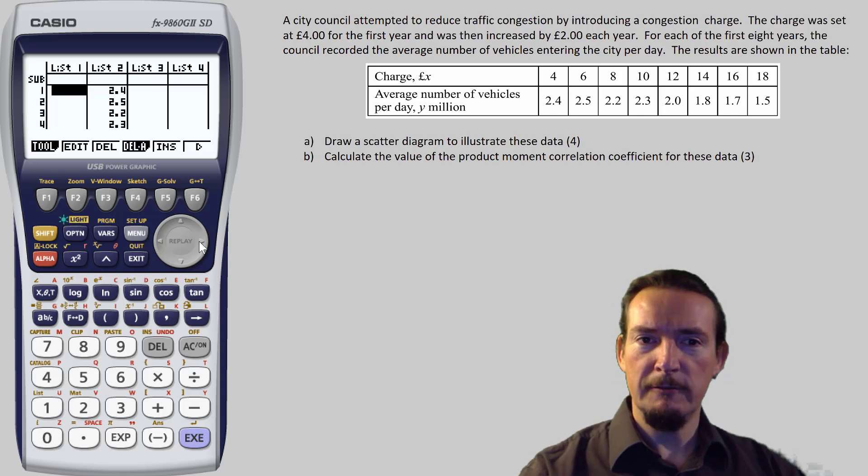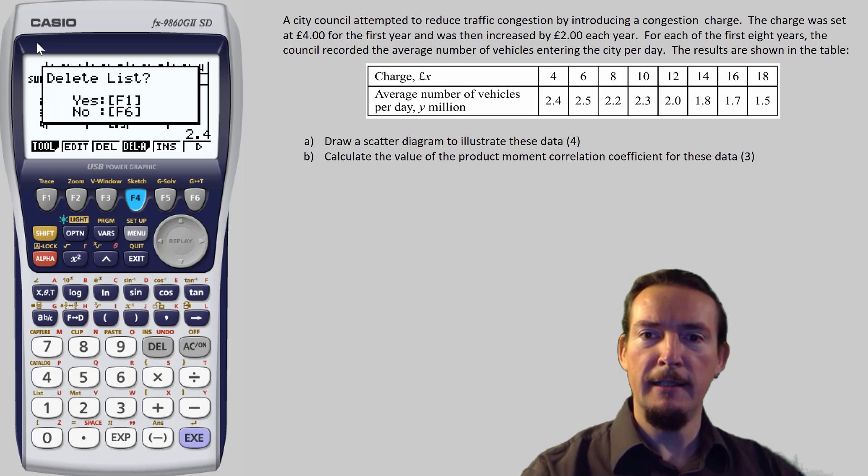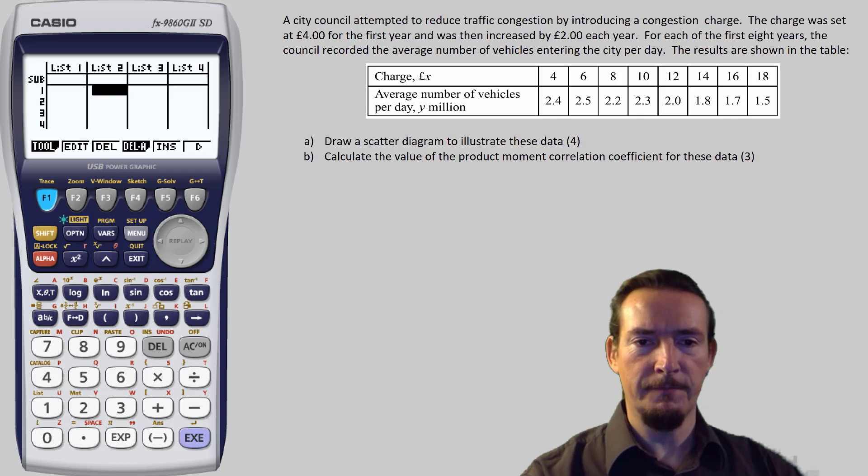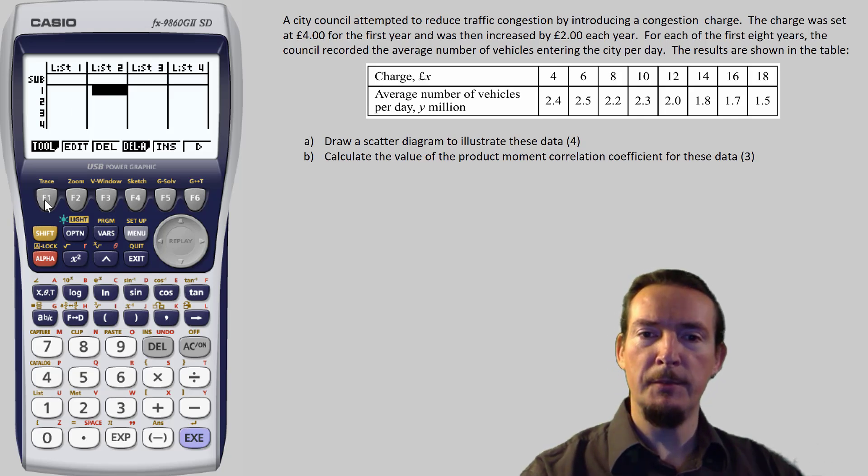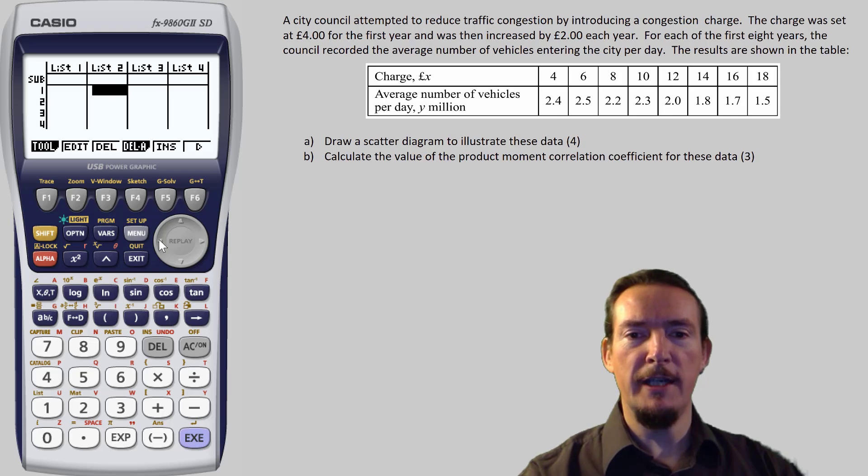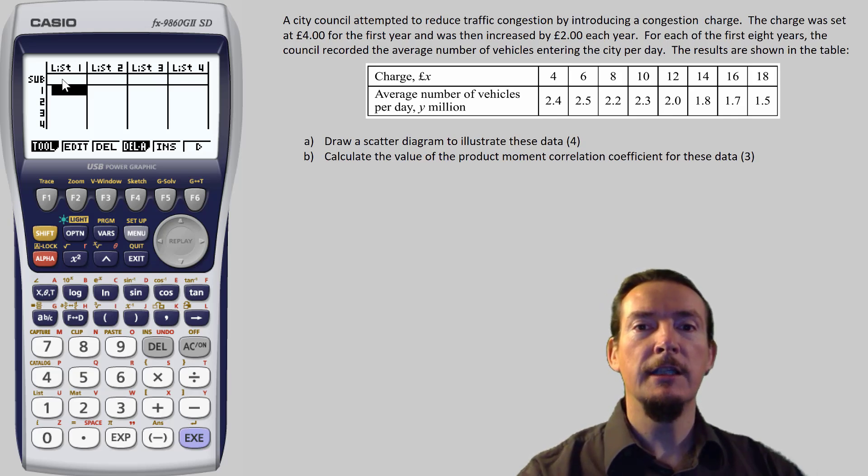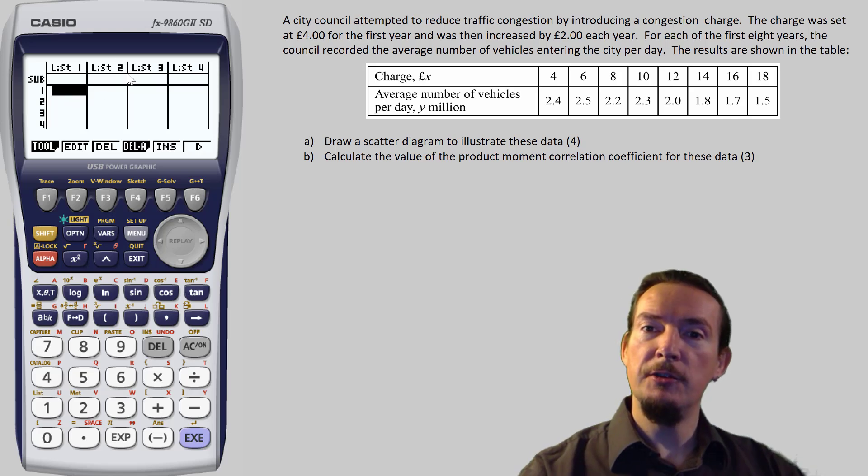Now, move the cursor into the second column, and then press F4 followed by F1 again to get rid of list 2. Right, so having now tidied up, we can start entering our new data. We will use list 1 to hold the charges in pounds, and list 2 to hold the average number of vehicles per day.